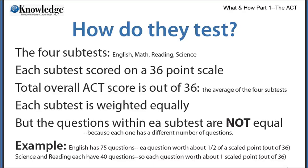Since each subtest has a different number of questions, the questions within each subtest end up being weighted differently. Since there are more English grammar questions — 75 — the grammar questions are worth about one half of a scaled point each, compared to science reasoning and reading, where each question is worth about one scaled point.